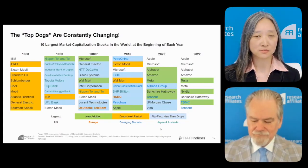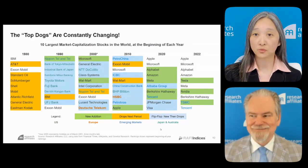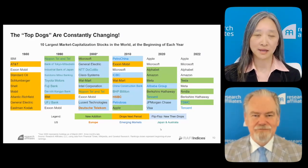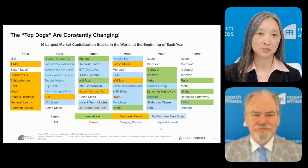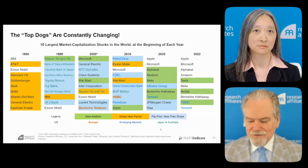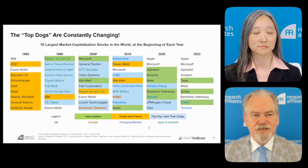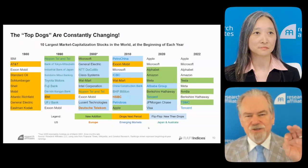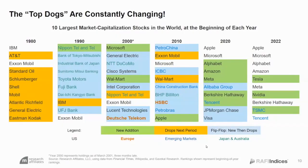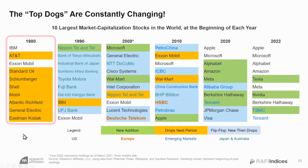One way we like to look at this is what we call top dogs — the companies that are the largest market cap in their sector, country, or the world. These are the ten largest market cap companies on the planet, decade by decade back to 1980. In 1980, ten out of ten were U.S. stocks, and half were energy stocks — this was the oil bubble. These companies were presumed to more or less own the world because they controlled where power comes from.